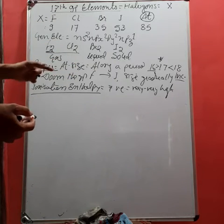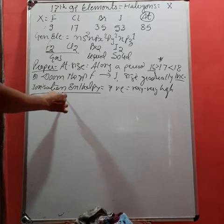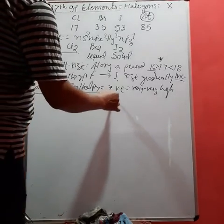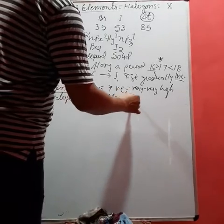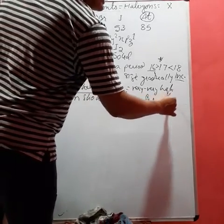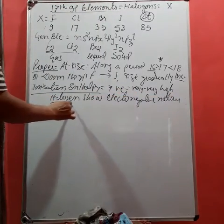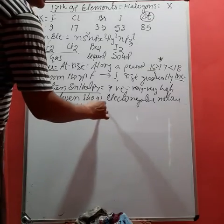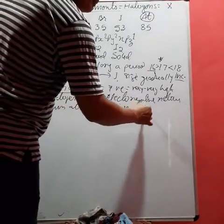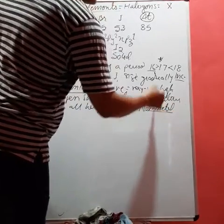It shows electronegative nature, not electropositive. Halogens show electronegative character. Thus all halogens except astatine are non-metals.